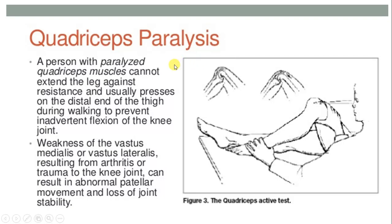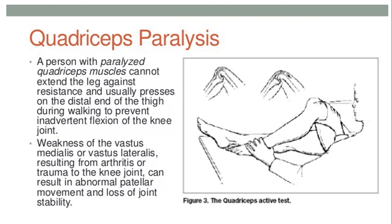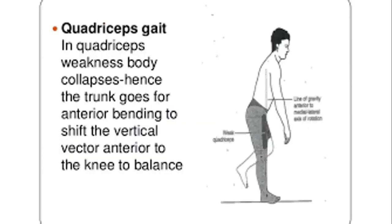When these muscles are paralyzed, because the quadriceps muscles are the strong extensors of the knee joint, the patient will be unable to extend the knee against resistance — unable to extend the leg. One hand is over the foot and the other over the thigh, and the patient is asked to extend the leg. The weakness of vastus medialis and lateralis resulting from arthritis or trauma to the knee joint can result in abnormal patellar movement and loss of joint stability.